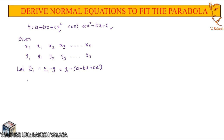The summation of residual values is U equal to summation from i equal to 1 to n of the quantity yi minus a plus bxi plus cxi square, whole square. Let us call this equation number 1, and this is equation number 2.